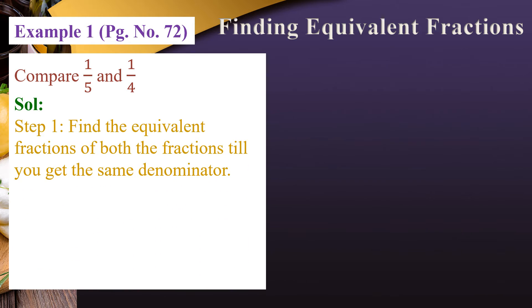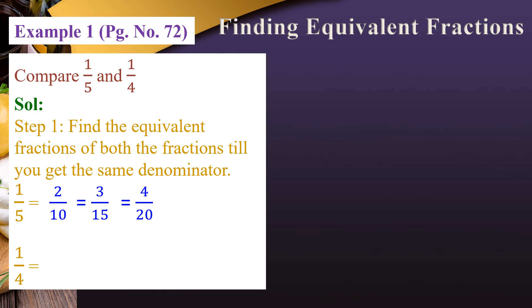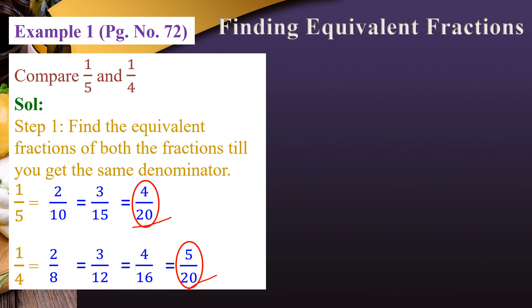Solution: The first step is to find the equivalent fraction of both fractions until we get the same denominator. For 1/5: 2/10, 3/15, 4/20. For 1/4, multiplying numerator and denominator by 2, 3, 4: 2/8, 3/12, 4/16, and continuing to 5/20. Now both fractions have denominator 20, giving us 4/20 and 5/20.